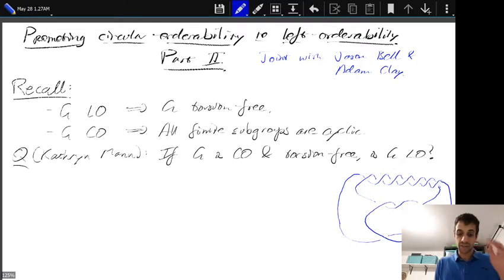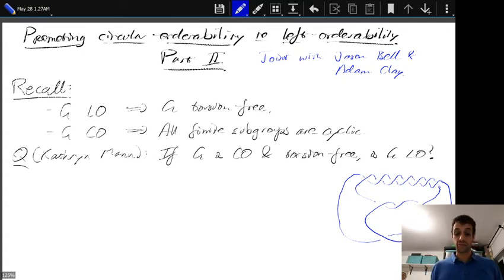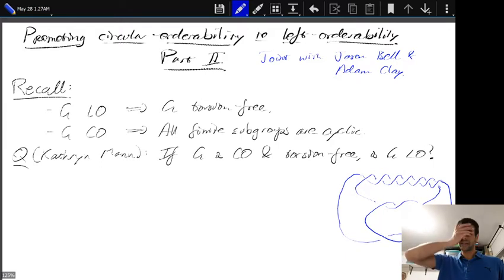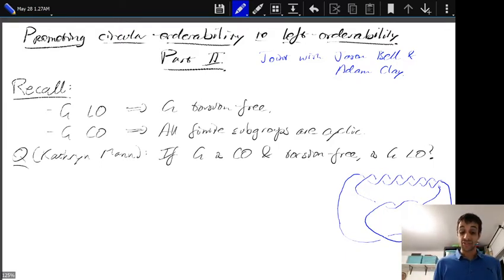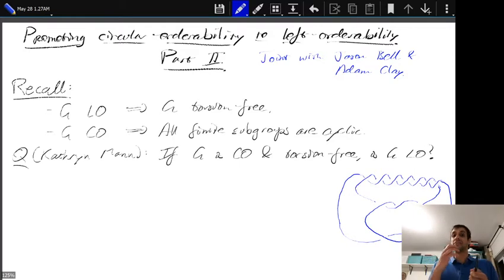Have a look at Part One for the basic definitions and terminology. Recall from Part One: a group being left orderable implies the group is torsion free, and the group being circularly orderable implies all finite subgroups are cyclic. A question that Katie Mann asked myself and Adam is: if G is circularly orderable and torsion free, is it necessarily left orderable?